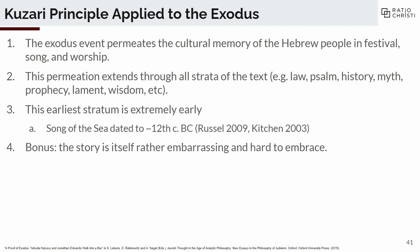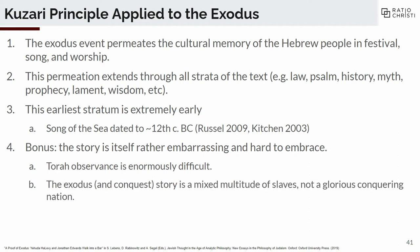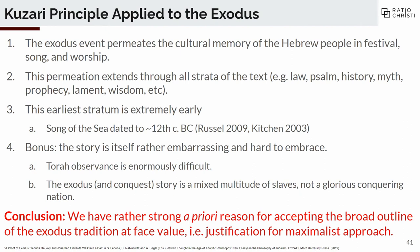Here's the bonus part: the story itself is a bit embarrassing and hard to embrace. First, if you're an Israelite and you accept that you were rescued from Egypt, you have to observe the Torah, which is not a fun thing to do — it requires circumcision; I think I've made my point. Second, the Exodus and conquest story is a mixed multitude of slaves. It's not a homogenous race of warriors that emerges from some primordial sea and conquers the world — it's a bunch of miserable slaves, and they're not even all ethnically homogenous. The conclusion of all of this is that the Exodus tradition meets all three of the conditions for the Kuzari principle.